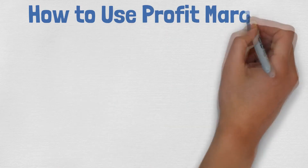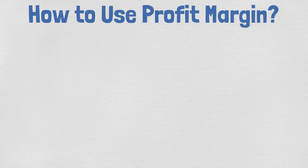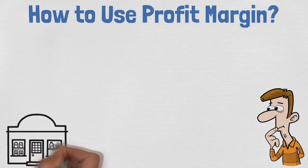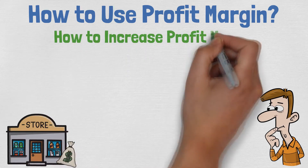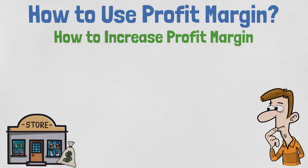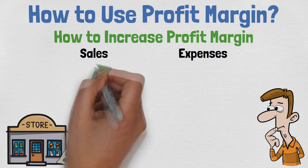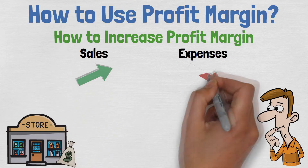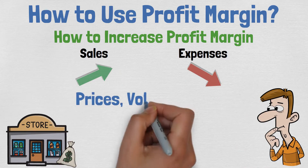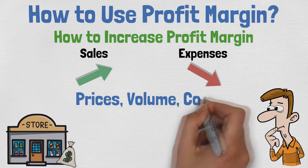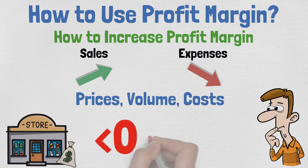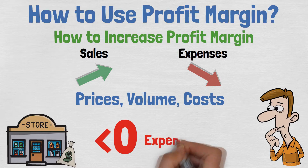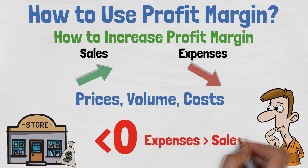So how can we use the profit margin in our investments? With profit margins we can see how well the company is managing its finances. There are two ways to increase the profit margins: either by increasing the sales or by cutting the expenses, so it is important for the manager to adjust the prices, volume and costs correctly. If the profit margin is zero or negative, it means that the business has too high expenses compared to sales.